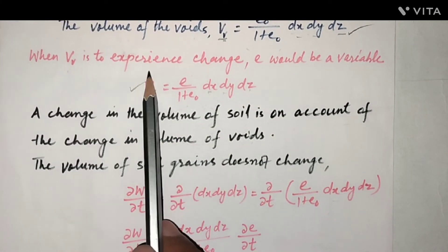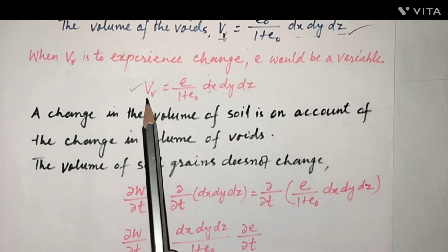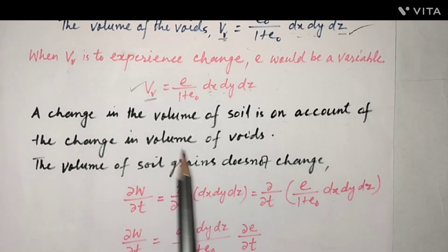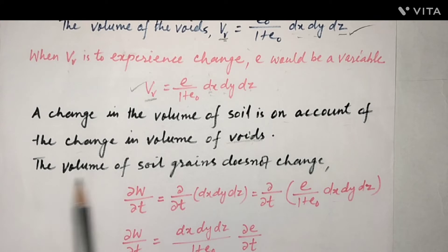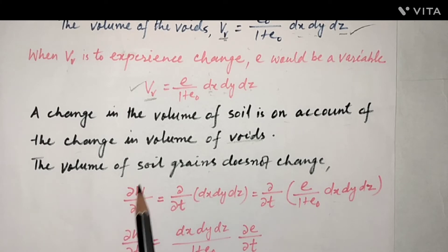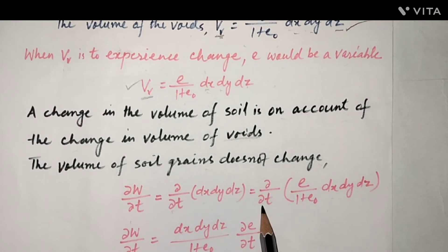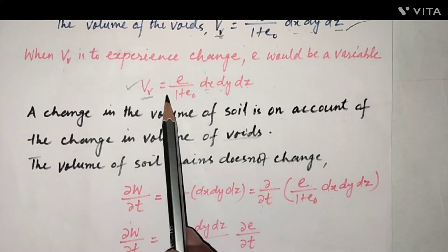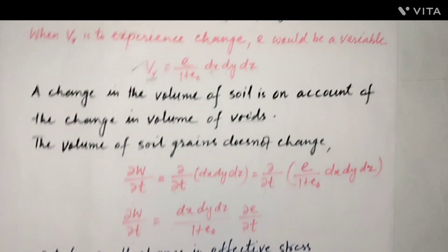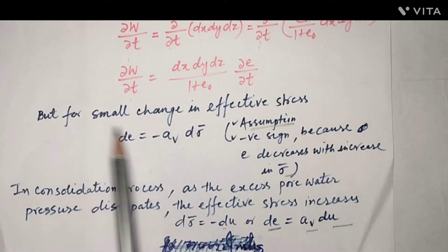When void ratio changes, e becomes a variable and the volume of voids = (e/(1+e₀)) · dx·dy·dz. A change in volume of soil is on account of the change in volume of voids. The volume of soil grains does not change because we assumed soil grains are incompressible, as is water. So ∂W/∂t = dx·dy·dz · (1/(1+e₀)) · ∂e/∂t. For small changes in effective stress, de = −Av · dσ̄ (from assumption 6).